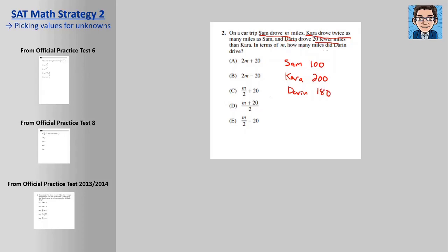The question is saying, how many miles, in terms of m, which is in terms of what Sam drove, did Darren drive? So we know that in this example, with these numbers that we picked, Darren is 180. We're trying to find out which one of these equals 180. Let's plug in 100 and figure out which one equals 180. So 2 times 100 is 200 plus 20, that's not 180. 2 times 100 is 200 minus 20 is 180. So it looks like that's the answer, but we're going to